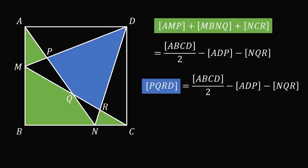We'll see both of these are equal to half the area of the square minus the area of ADP minus the area of NQR. Thus, these two equations are equal to each other, and thus the green region is exactly equal to the area of the blue region.